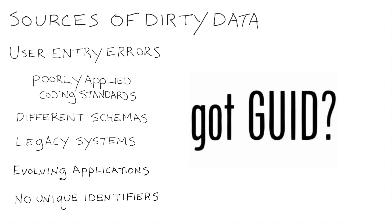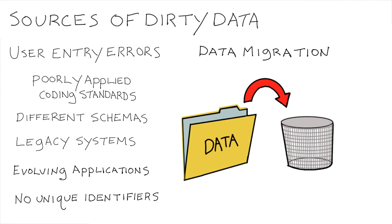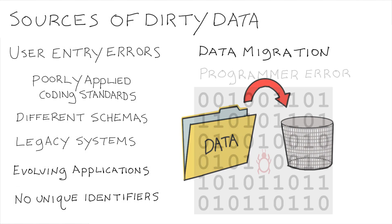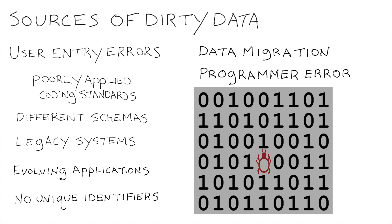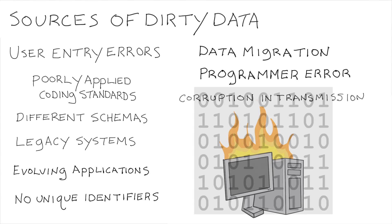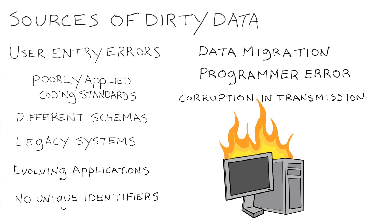Some of our data won't have the unique identifiers it should. Other data will be lost in transformation from one format to another. And then of course, there's always programmer error. And finally, data might have been corrupted in transmission or storage by cosmic rays or other physical phenomena. So hey, one that's not our fault.